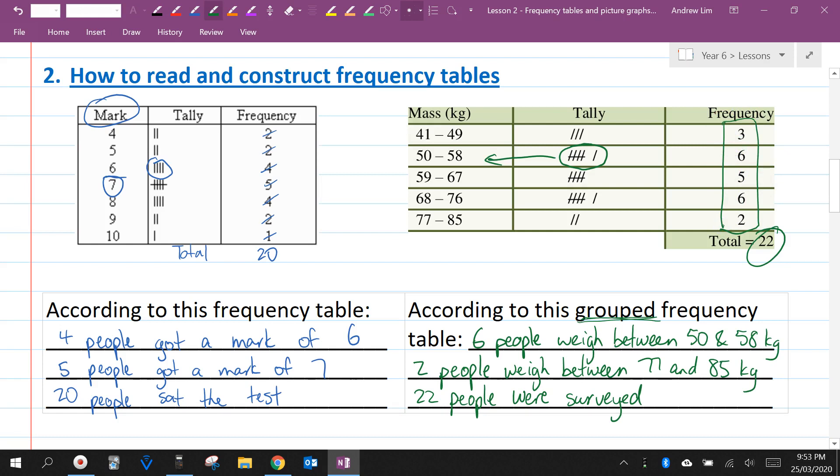It's important for you to remember that tally and frequency are exactly the same thing. If you see here, there are three lines, that's three people. You see here, there are five lines, that's five people. So they mean exactly the same thing. And frequency just means how many. How many people weigh between 50 and 58? Six people.